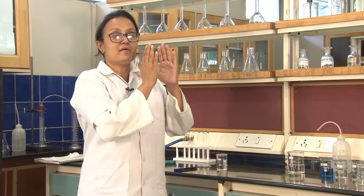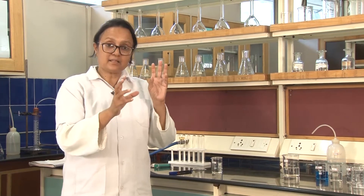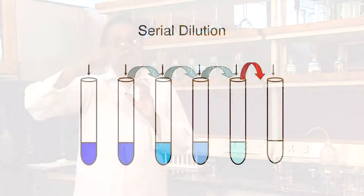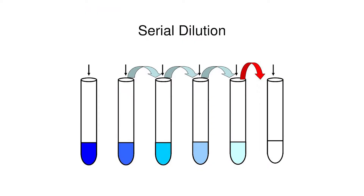Serial dilution is a range of dilutions performed in a very systematic manner. If you have a 4% concentration in the original sample, the next dilution will be 2%, which is 50% of the original. The following step will again be another 50%, so we go step by step, continuously halving the concentration.